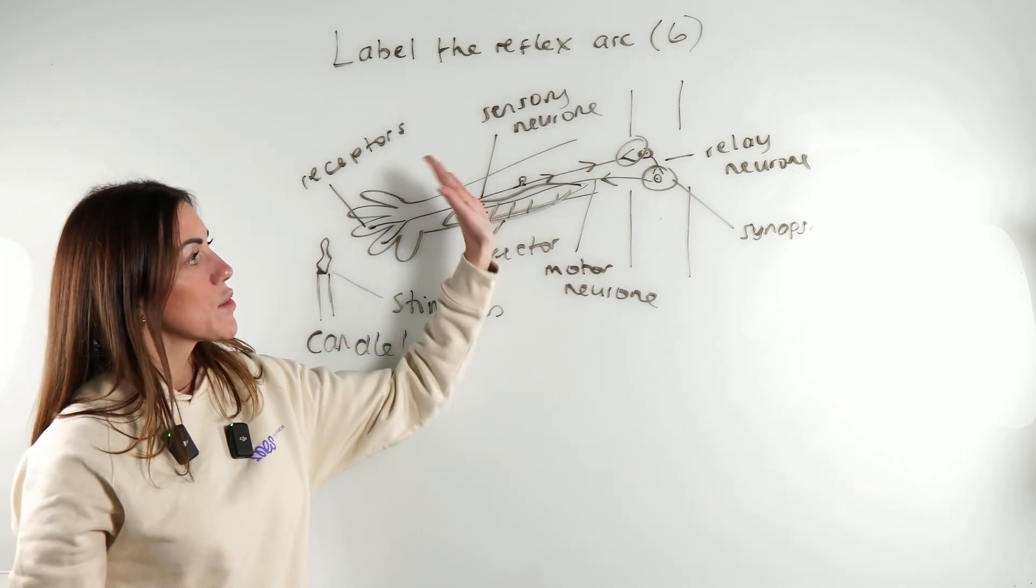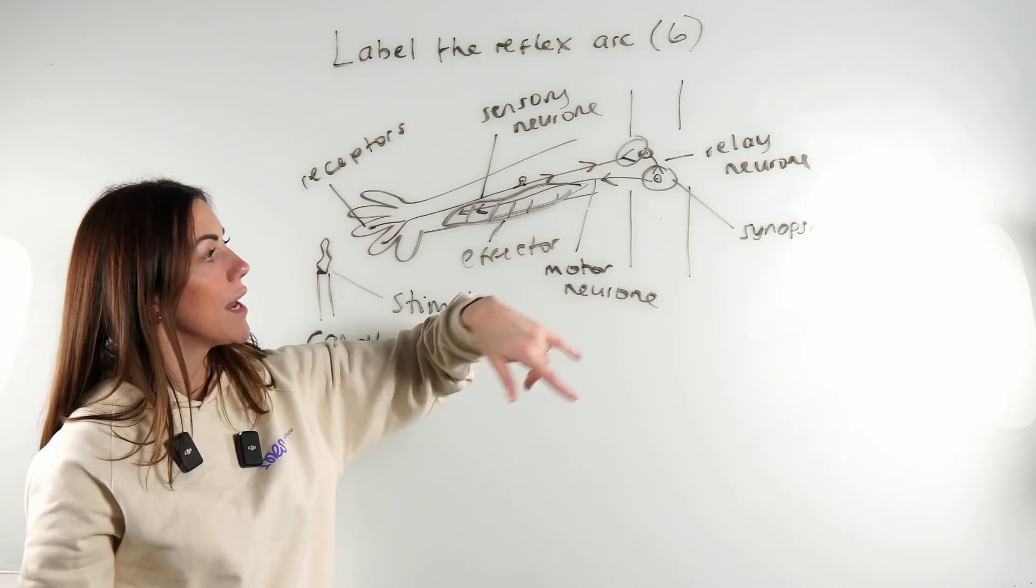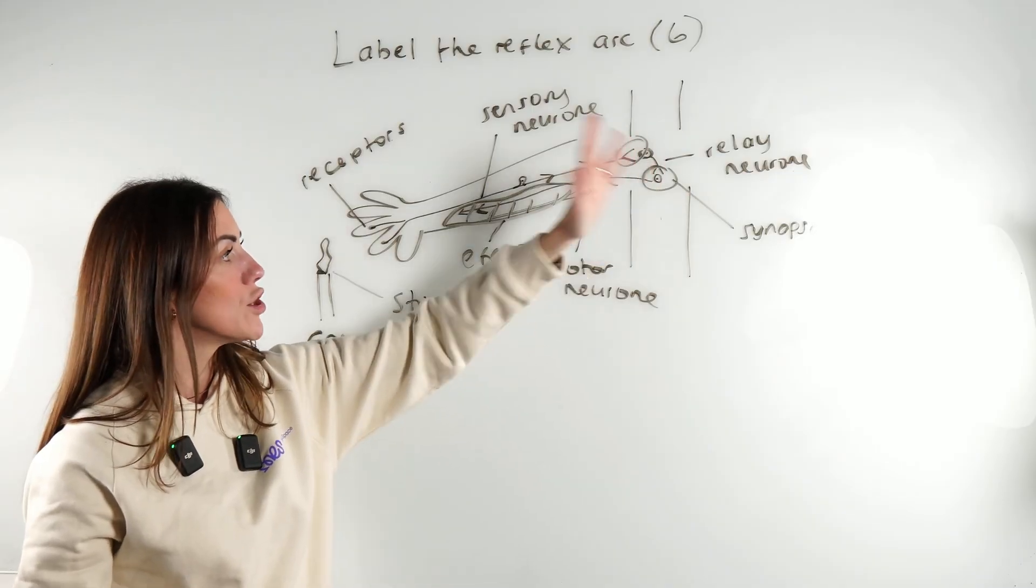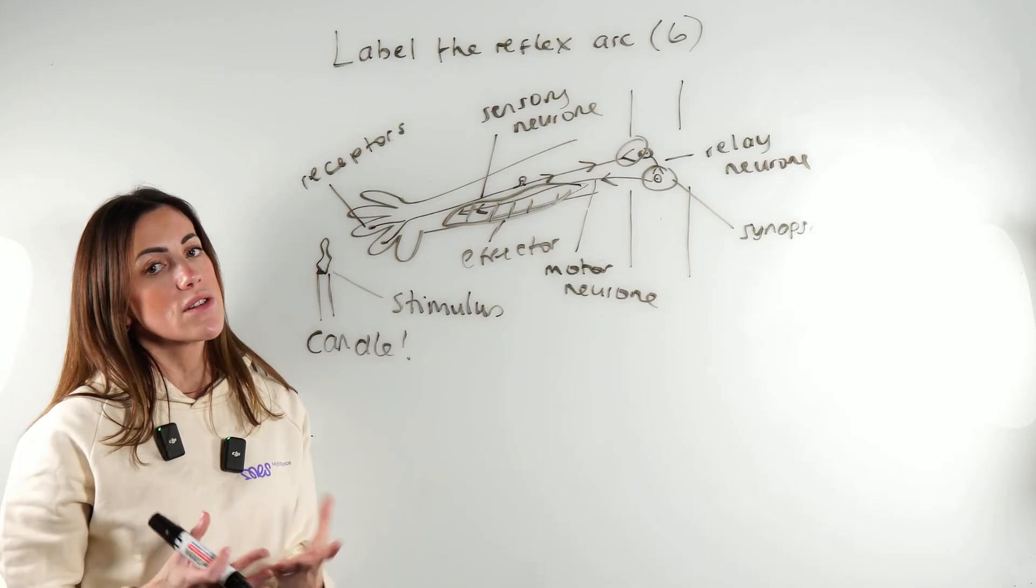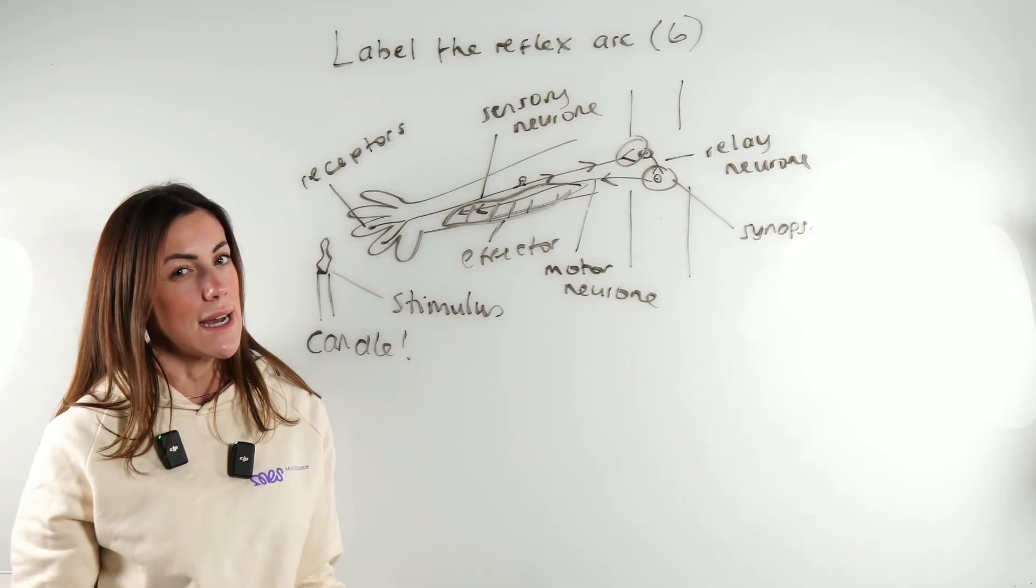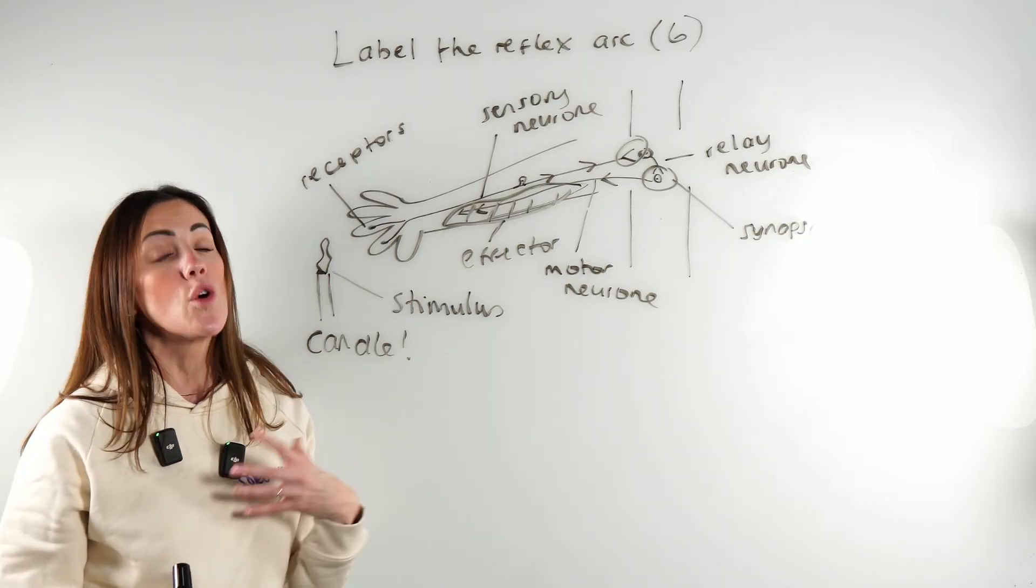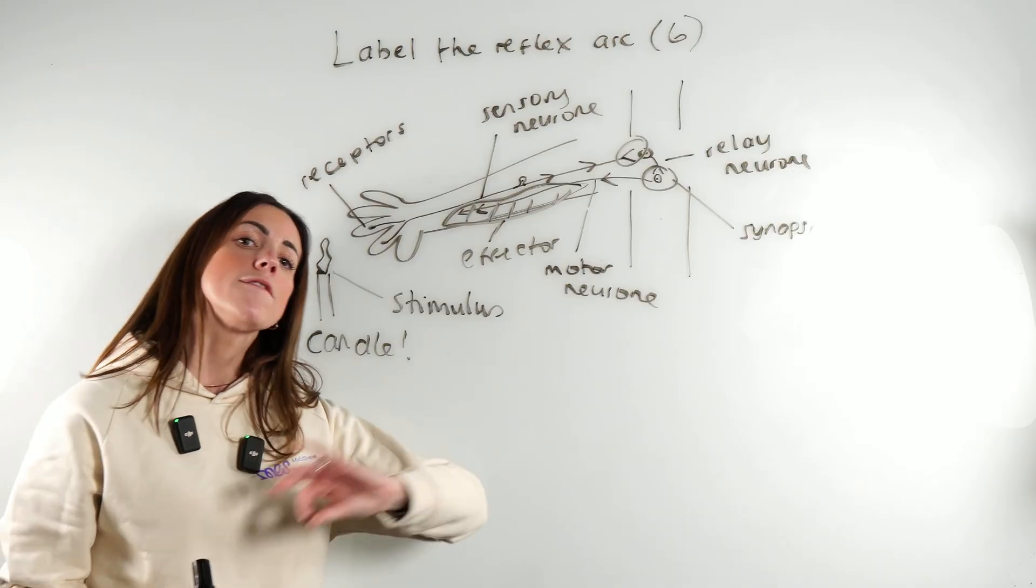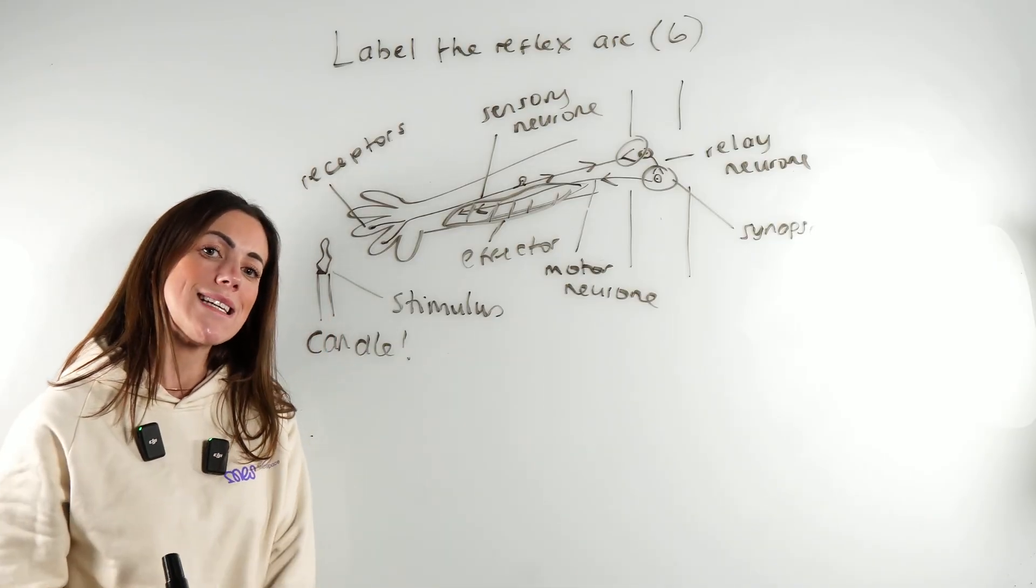There'll be a synapse between the sensory and relay neuron, and another synapse between the relay neuron and motor neuron. Remember, the electrical impulse cannot cross the synapse, so chemicals or neurotransmitters will diffuse across those gaps instead.